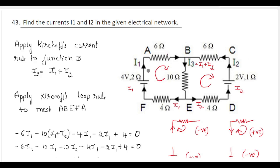In this circuit diagram, the current I1 is passing in one direction and the current I2 is passing in another direction. Both currents meet at point B and flow as I3, so I3 equals I1 plus I2. Once I3 reaches junction E, it splits back into I1 through the 4 ohm resistor and I2 through the other 4 ohm resistor.